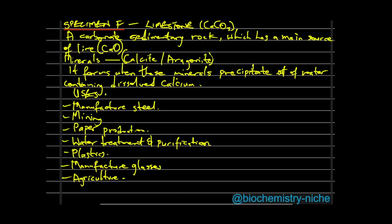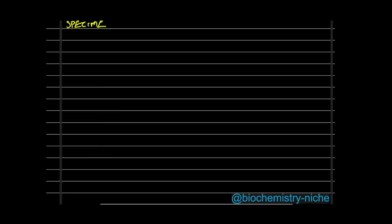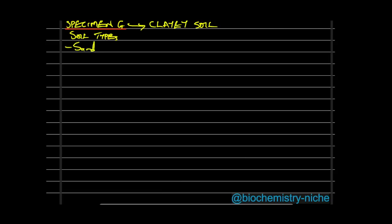Specimen G is clay soil. There are three major soil types: sandy, clay, and loamy. Clay soil has very low porosity — it does not allow water to pass through easily — and has high water retention capability.